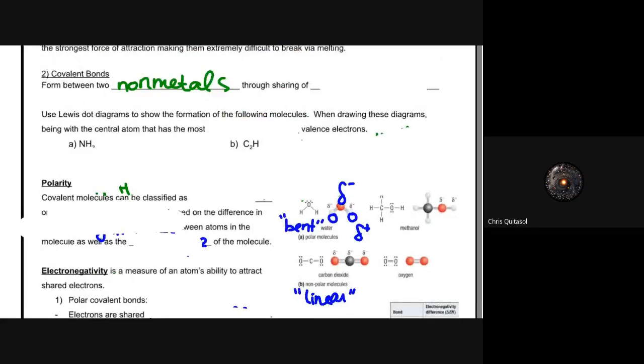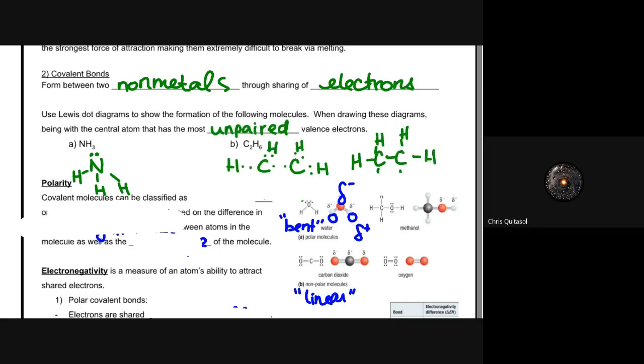So the covalent bonds we're looking at non-metals, and it's going to be through a sharing of electrons. Again, the Lewis dot diagrams that we're going to look at for this will look something like that. They're going to look at the unpaired valence electrons, and they're going to work at sharing those unpaired valence electrons in an attempt to try to make it as stable as possible. The key thing here being that it's non-metals, and as a result of it being non-metals and the electrons being shared, it leads to something called polarity.